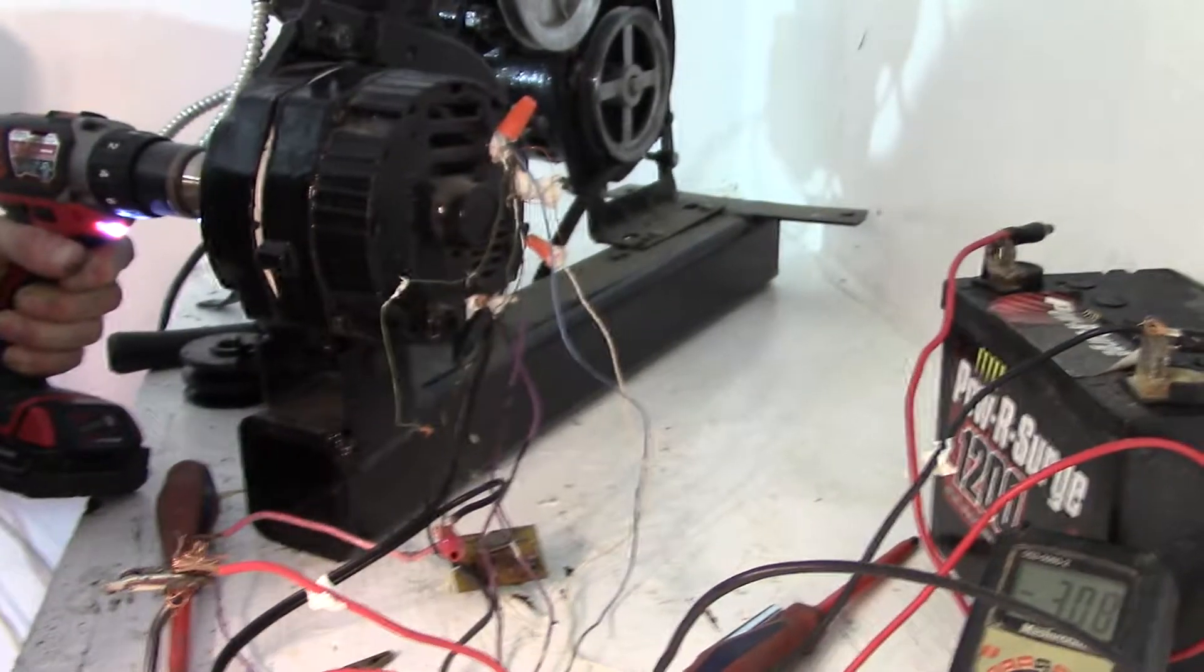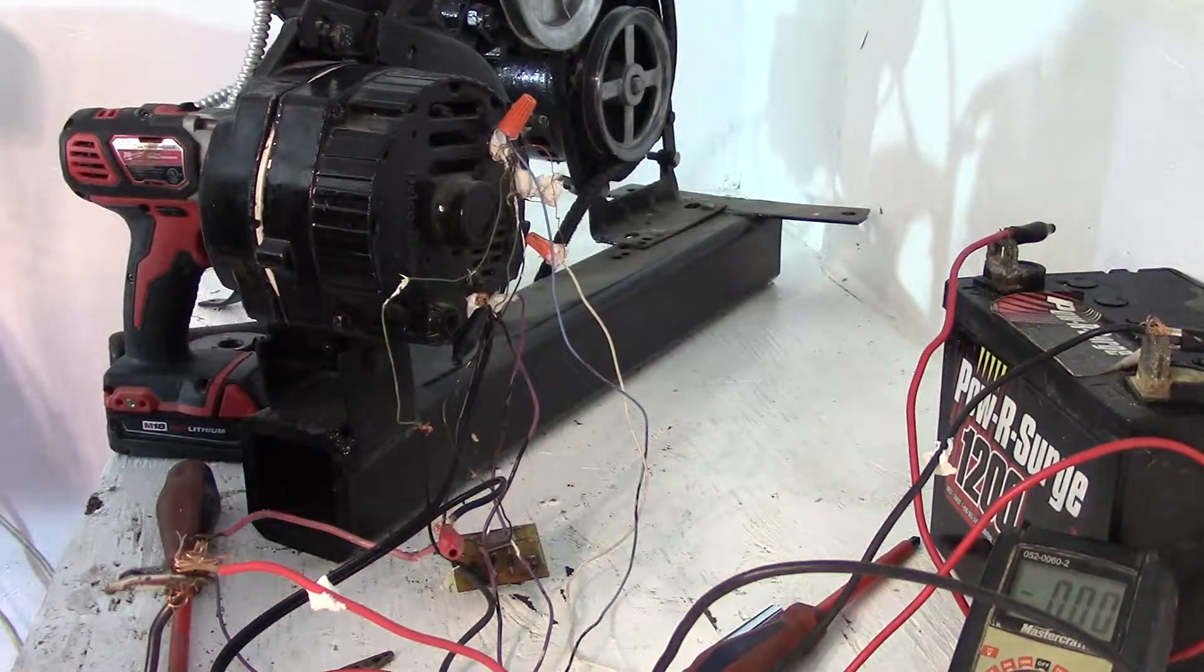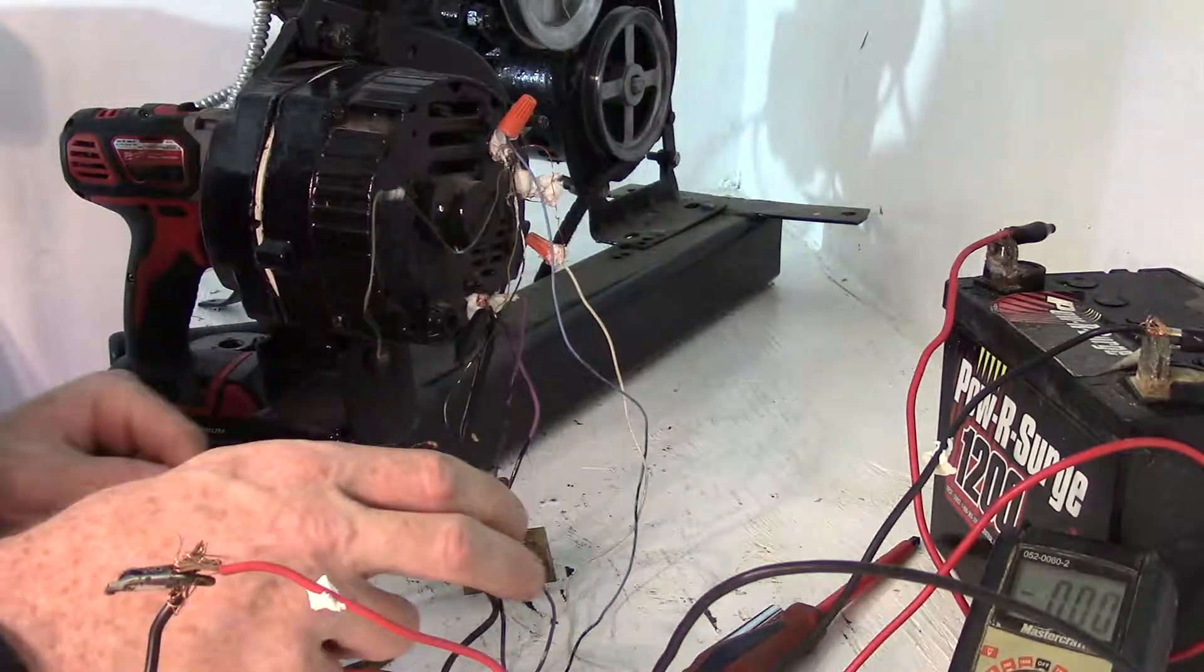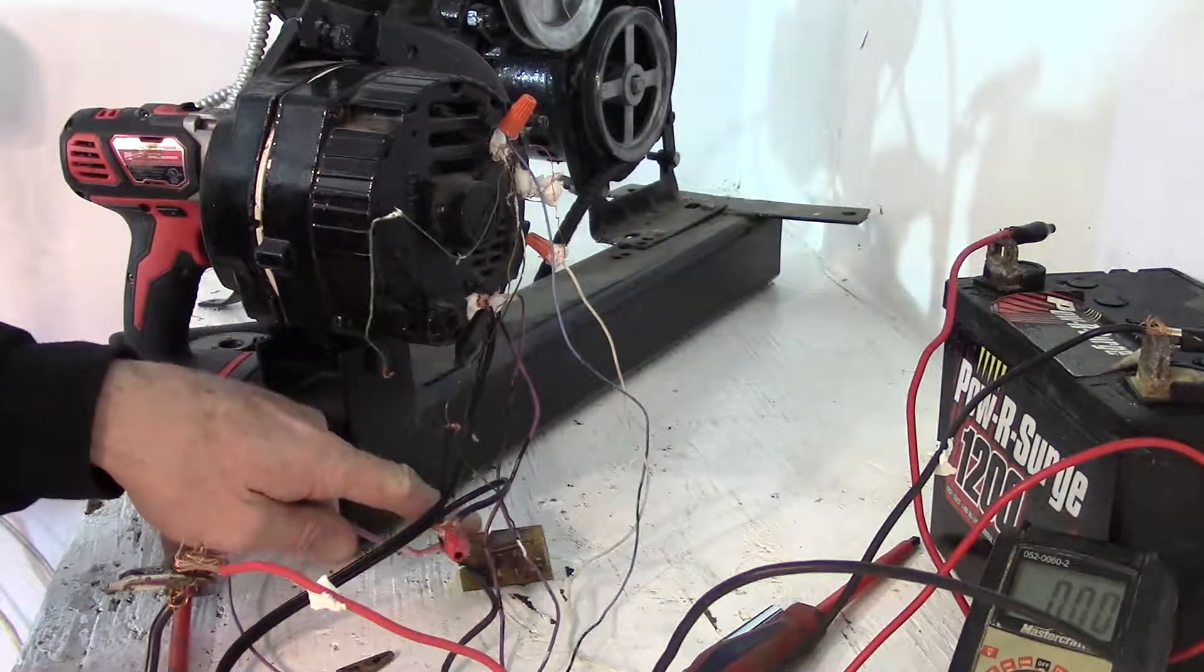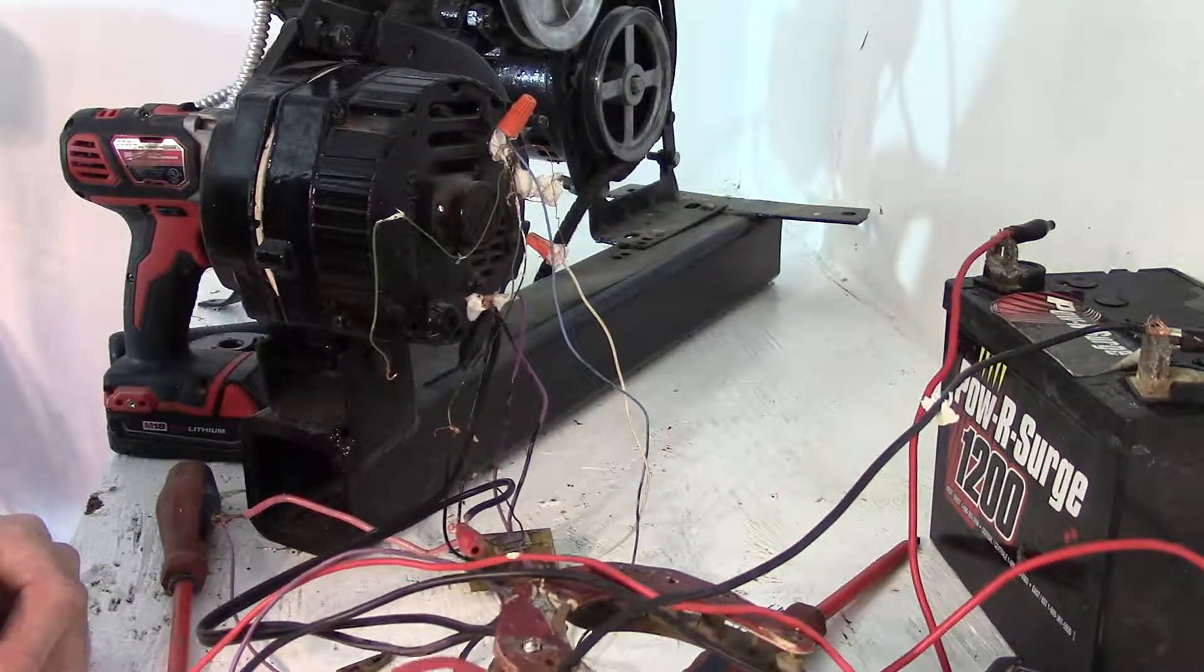It spins pretty easy because it's not hooked up to the high voltage coils. This is just a small bridge rectifier which is exciting the coils. This is the big bridge, it's from the car alternator.